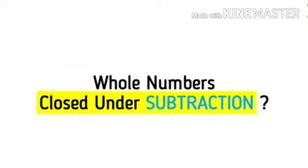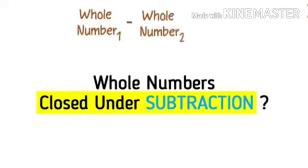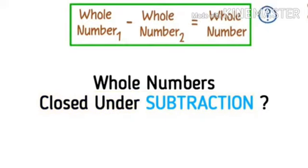What do we mean by closed under subtraction? It means that if we take any two whole numbers and subtract them, then we will always get whole number. Will this always happen? Let's try to find this out by subtracting any two random whole numbers.